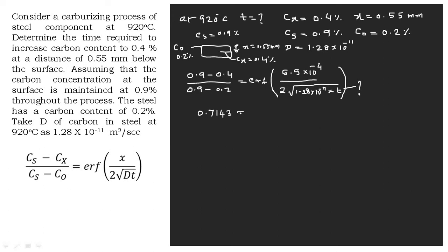From the erf table, erf(0.713) = 0.75. Since erf(y) ≈ 0.7143 ≈ 0.75, we use y = 0.713. So now we can write: 0.75 = (5.5 × 10⁻⁴) / (2√(1.28 × 10⁻¹¹ · t)).